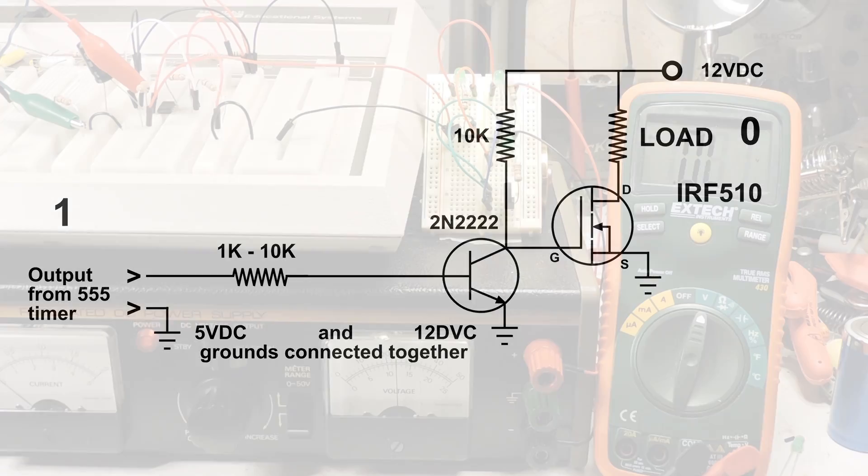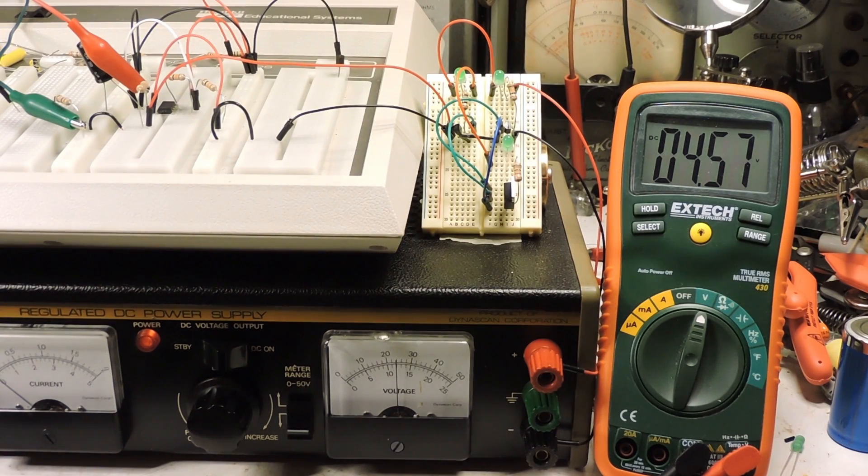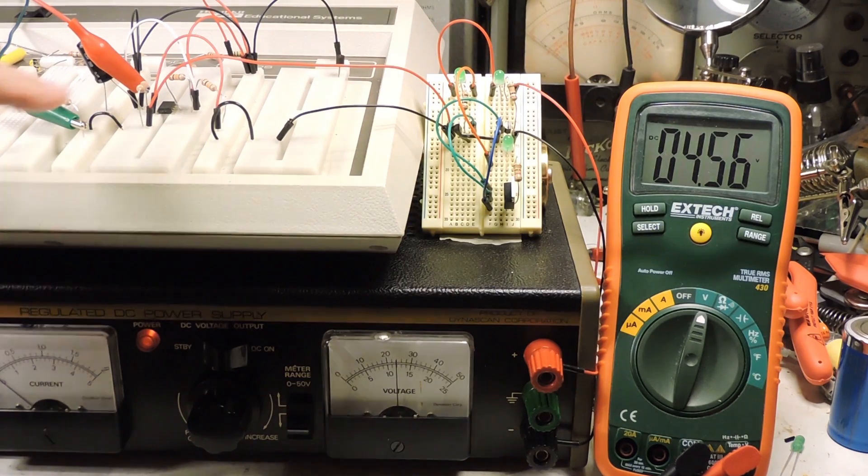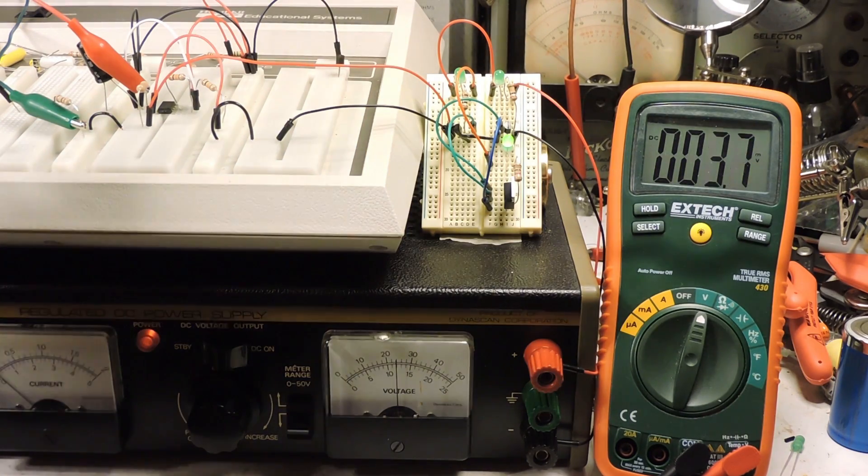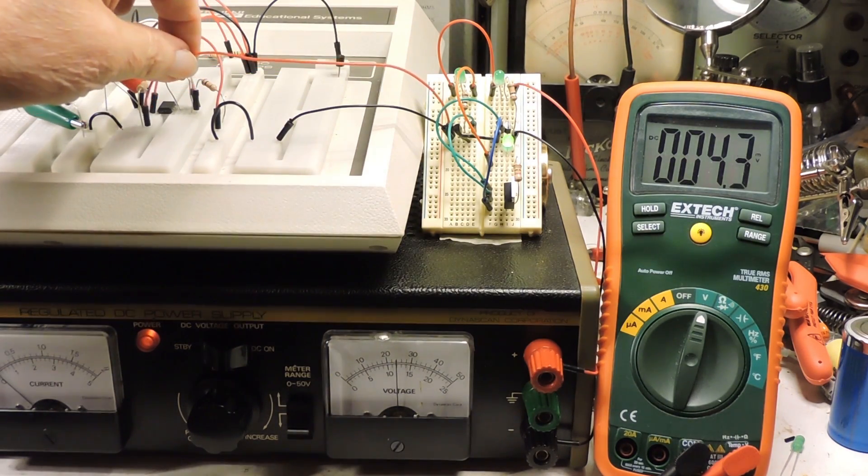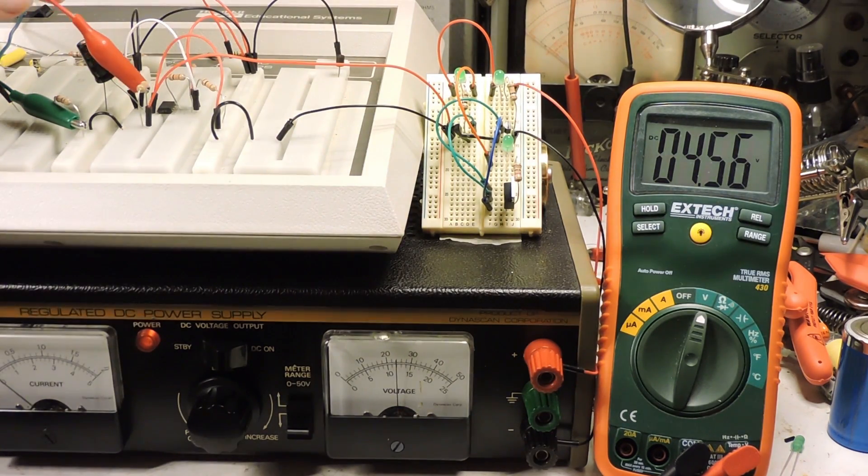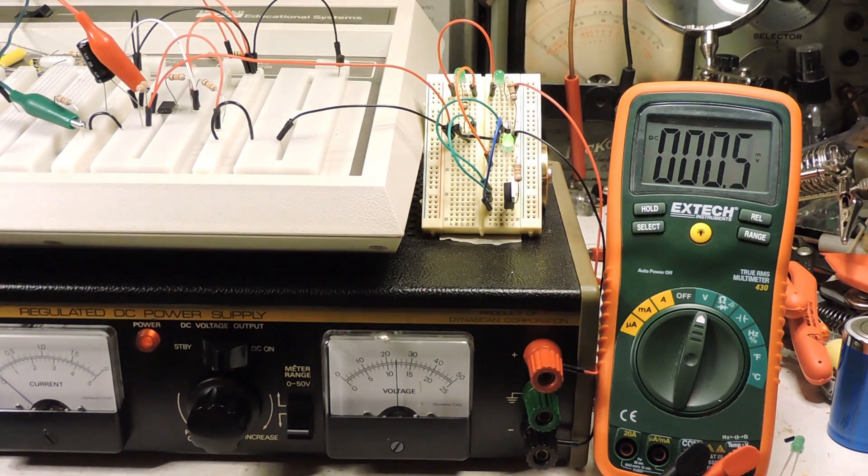Okay, here's the setup. I got my 555 timer over here driving this - this is the signal lead. Right now it's going through a 10k ohm resistor and I've got the meter hooked up to the output of the 555 timer.